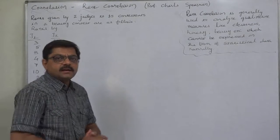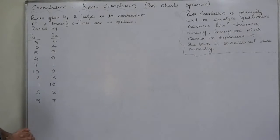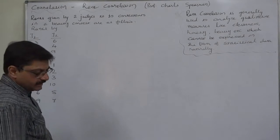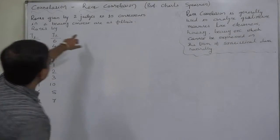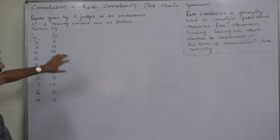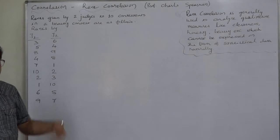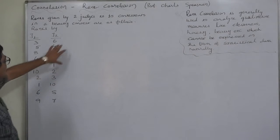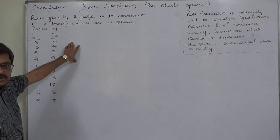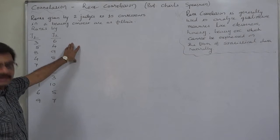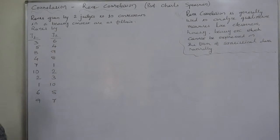Let us study the whole thing through an example and that is ranks given by two judges to ten contestants in a beauty contest as follows. That means there were ten contestants and there were two judges. According to their own approaches, they have assigned ranks to ten contestants. And these are the ranks.